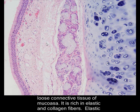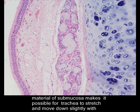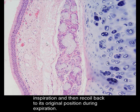The submucosa is rich in elastic and collagen fibers. The elastic material of the submucosa makes it possible for the trachea to stretch and move down slightly with inspiration, and then recoil back to its original position during expiration.